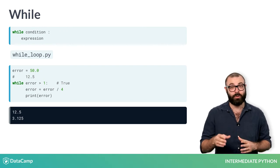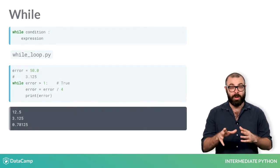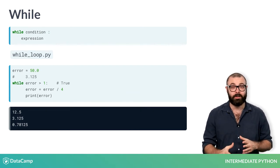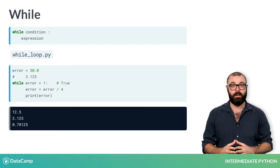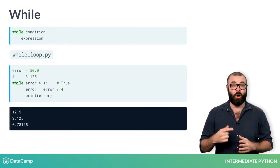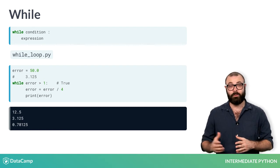Now, the error is 3.125 and Python heads back to the while condition. 3.125 is still greater than 1, so the corresponding code is executed again. Now, the error is only 0.78 and so on, as you can see from the printout.